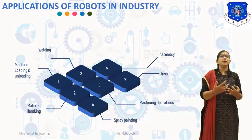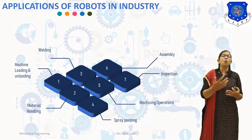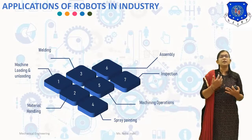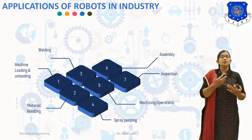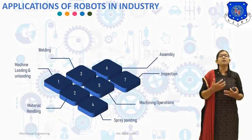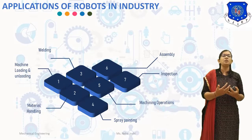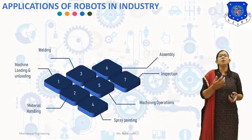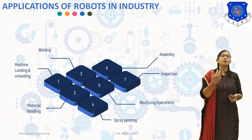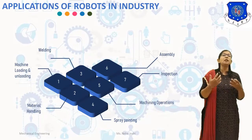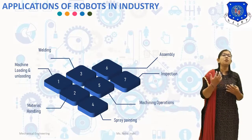The last application is inspection. Robots are used for inspecting parts or sub-assemblies. Inspection probes mounted on the end effectors are used for checking dimensions. Checked dimensions are compared with predetermined values. In some cases, robots separate the rejected parts. These are the applications of robots.